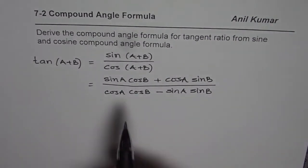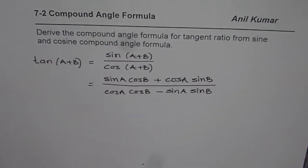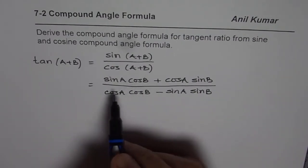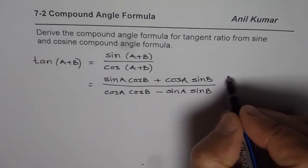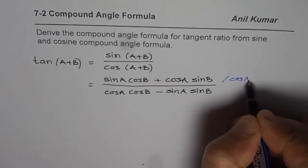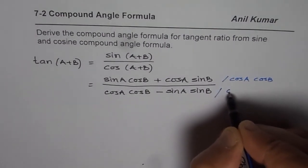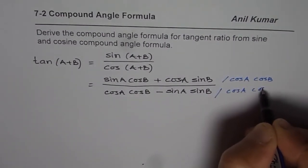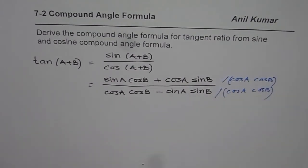Now, to get the ratios in tan, what should we do? This is a very important strategy and it can also be adopted for solving trigonometric identities. To get tan from sine and cosine, we should actually divide both these expressions by cos A cos B, both numerator and denominator. If you perform the same operation on both numerator and denominator, then you are not changing the equality.